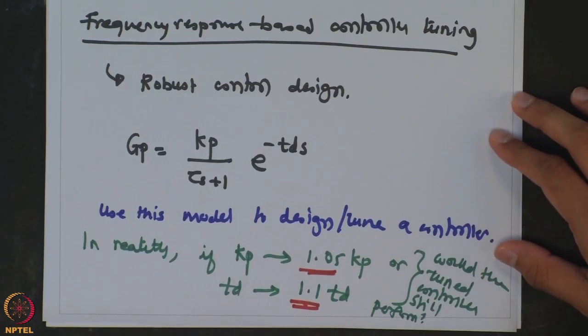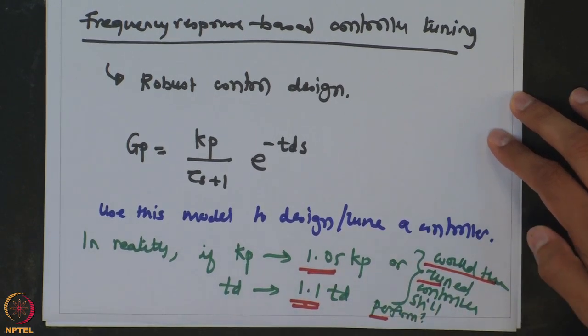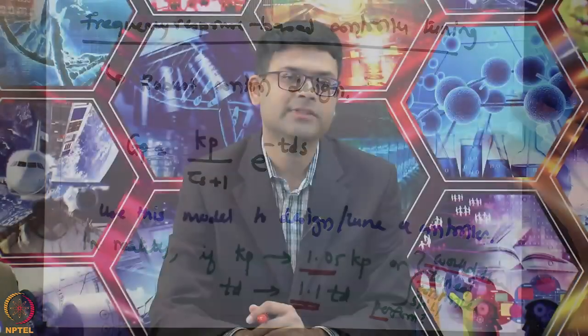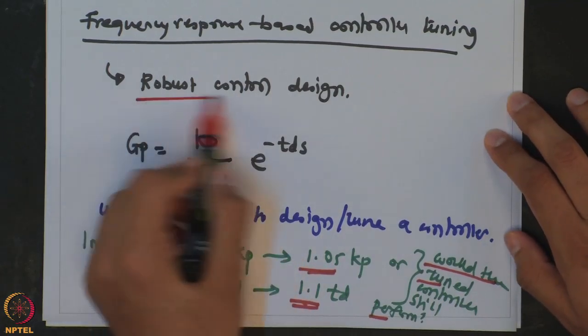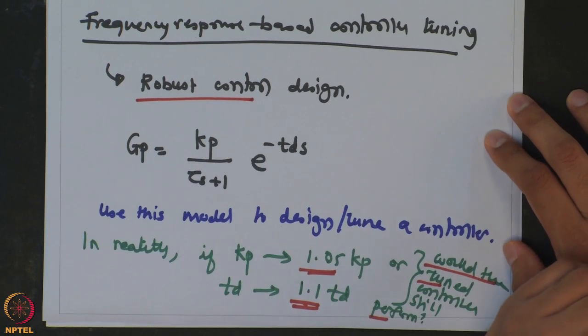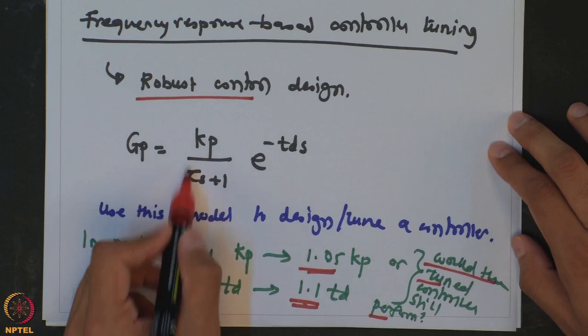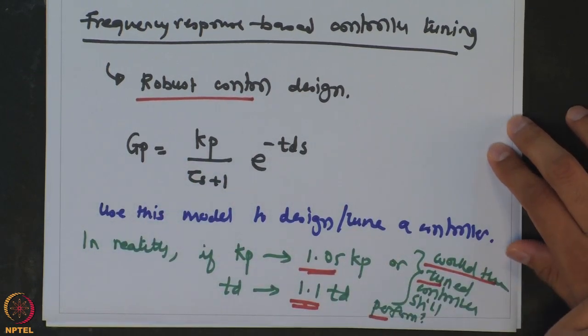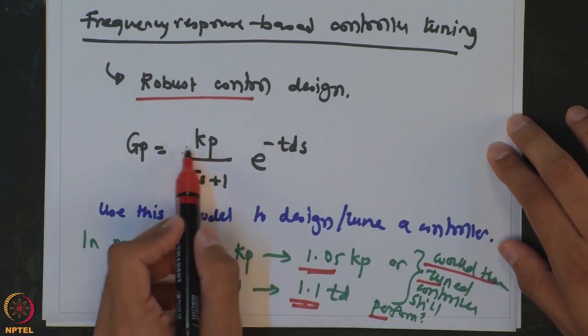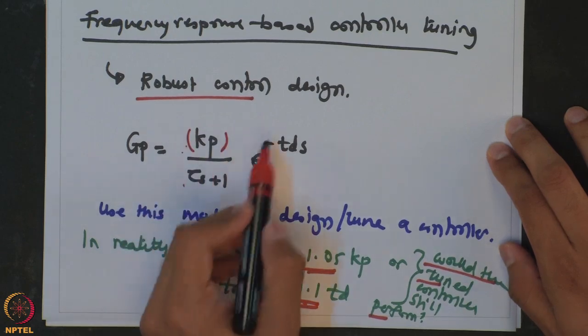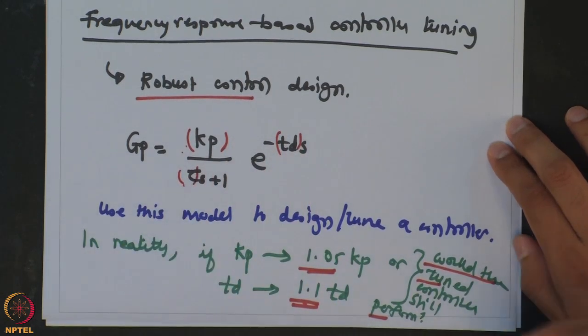In reality, if Kp changes — say Kp increases by 5 percent — or your dead time was wrongly calculated and the actual dead time is 10 percent extra, would the controller still perform? We are looking at the robustness of the controller: if process parameters have certain errors or variations, would the controller still maintain the stability of the closed loop system? If your controller can handle such large variation in process parameters, then the controller is robustly designed. These models are typically obtained from data and may not capture reality completely, so there is always a possibility of errors in these parameters, and your controller should be able to handle such variations.